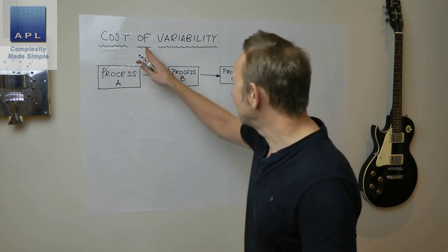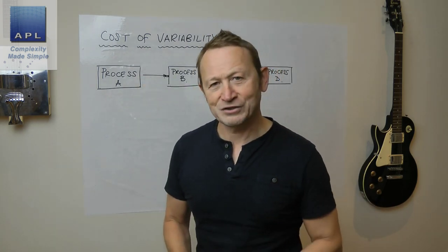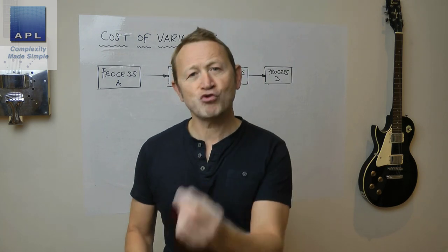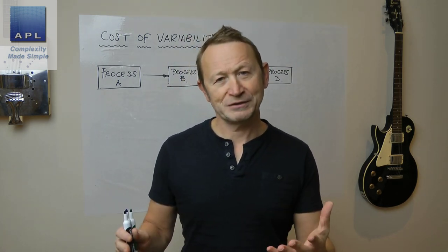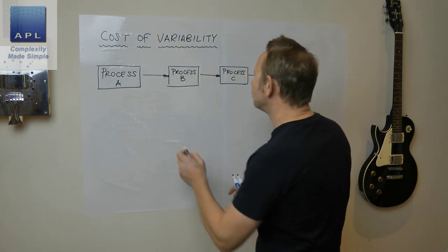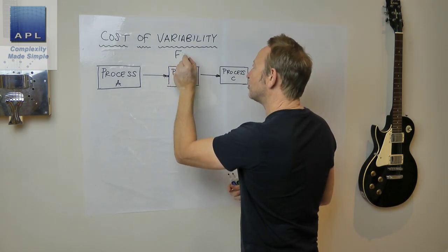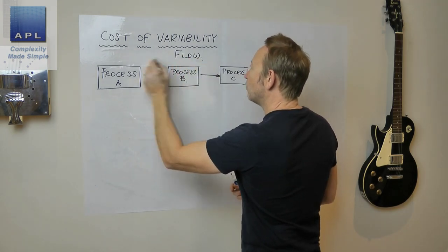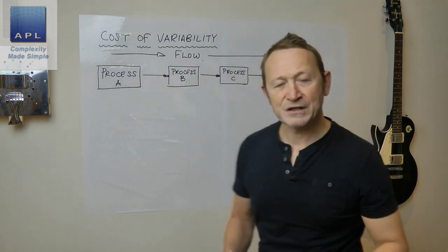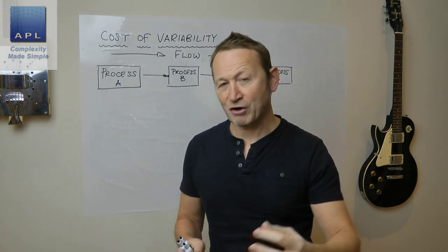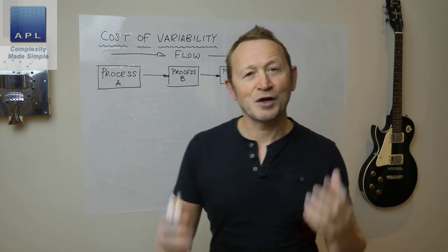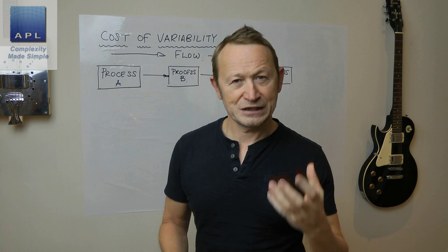Let's talk about the cost of variability. What we're going to look at is the idea of four processes trying to produce an item. Obviously, if you were super efficient and wanted to be lean, you would try to create a situation where products just flow through all four stages with very little stock and very little time in between — that would be a super efficient, low-cost way of producing those goods.